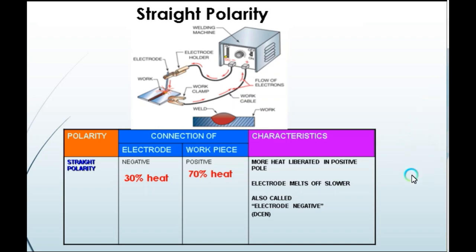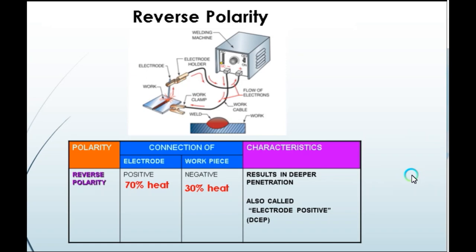Next is reverse polarity, or Direct Current Electrode Positive (DCEP). Here, the electrode is connected to the positive terminal — hence the name — and the workpiece is connected to the negative terminal. Due to high heat at the electrode, the electrode burns off faster, resulting in high deposition efficiency. Due to the high heat of melting, the depth of penetration also increases.